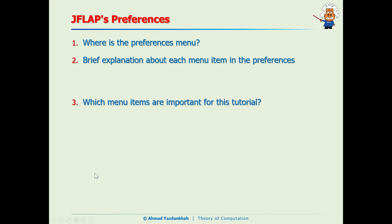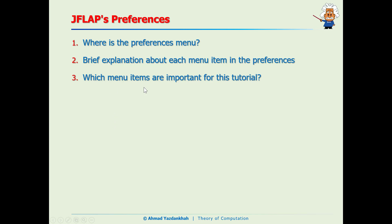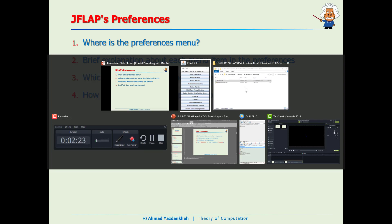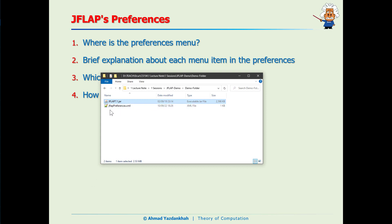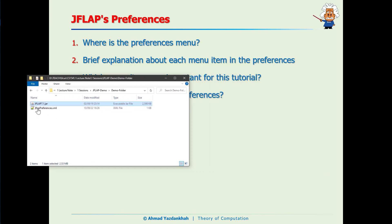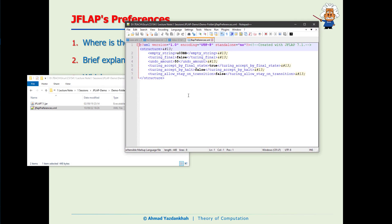Let me now explain how JFLAB saves the preferences. When we work with JFLAB preferences, it creates a new XML file. If we look inside it, we can see some settings stored there.